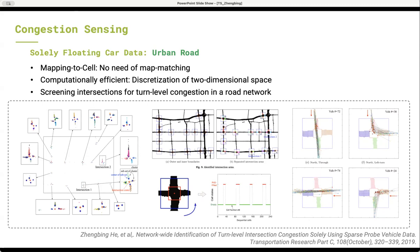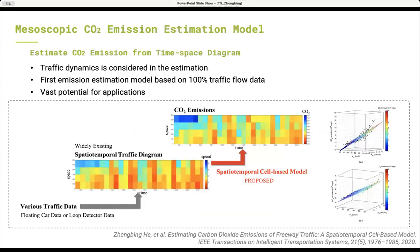We identify the turn-level congestion to answer the frequently asked questions: In the city, when and where does traffic congestion usually occur? This model estimates carbon dioxide emissions directly from time-space diagram, which better considers traffic dynamics. It opens a gate for estimating carbon dioxide emissions from widely available flow-based traffic data, since the time-space diagram, which is the model input, can be constructed by using various traffic flow data, such as loop detector data and low-frequency floating car data.